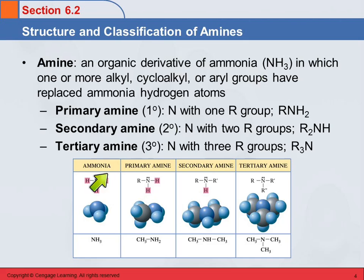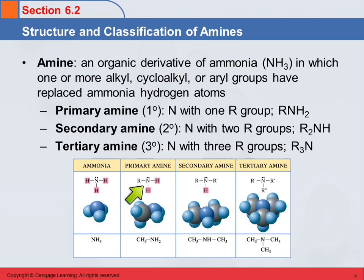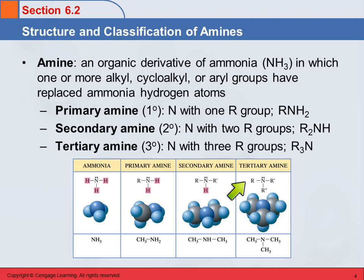Ammonia is NH3. Here we see the Lewis structure for it and a space-filling model. If we substitute one of these hydrogens for an alkyl group — here we have a methyl group — then this is an amine. There are two other hydrogens, and we can substitute one or both of those, ending up with up to three R groups: alkyl groups, cycloalkyl groups, or aryl groups.